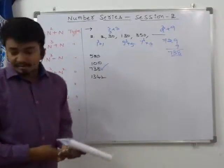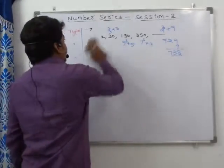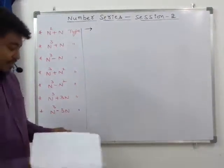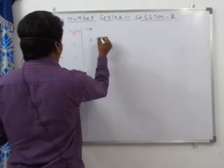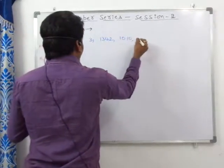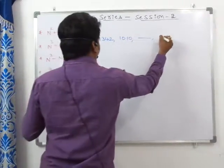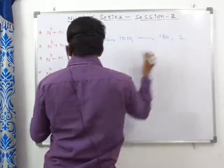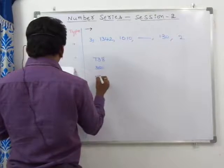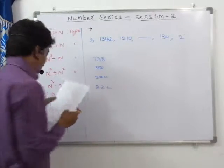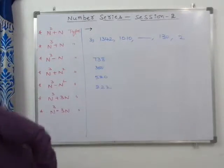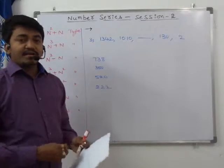It is better to remember the cubes of numbers. Question number 3: the series is 1342 (given), 1010, missing number, 130, then 2. The options are 738, 350, 520, and 1332. This is again an important model on cube series.